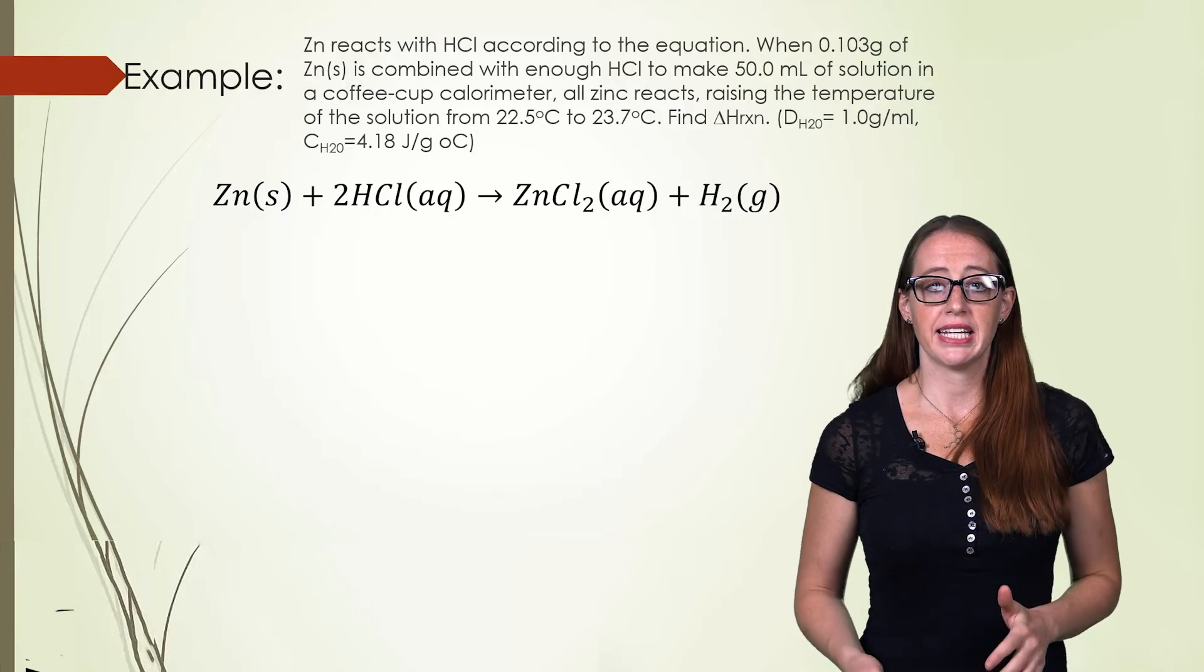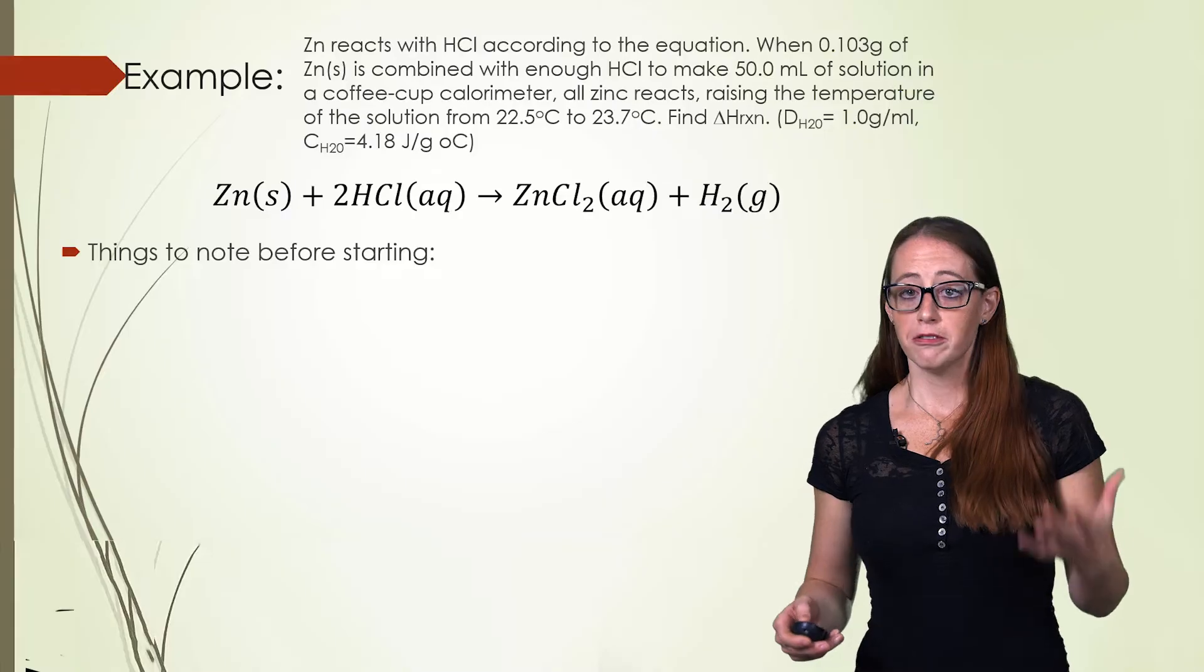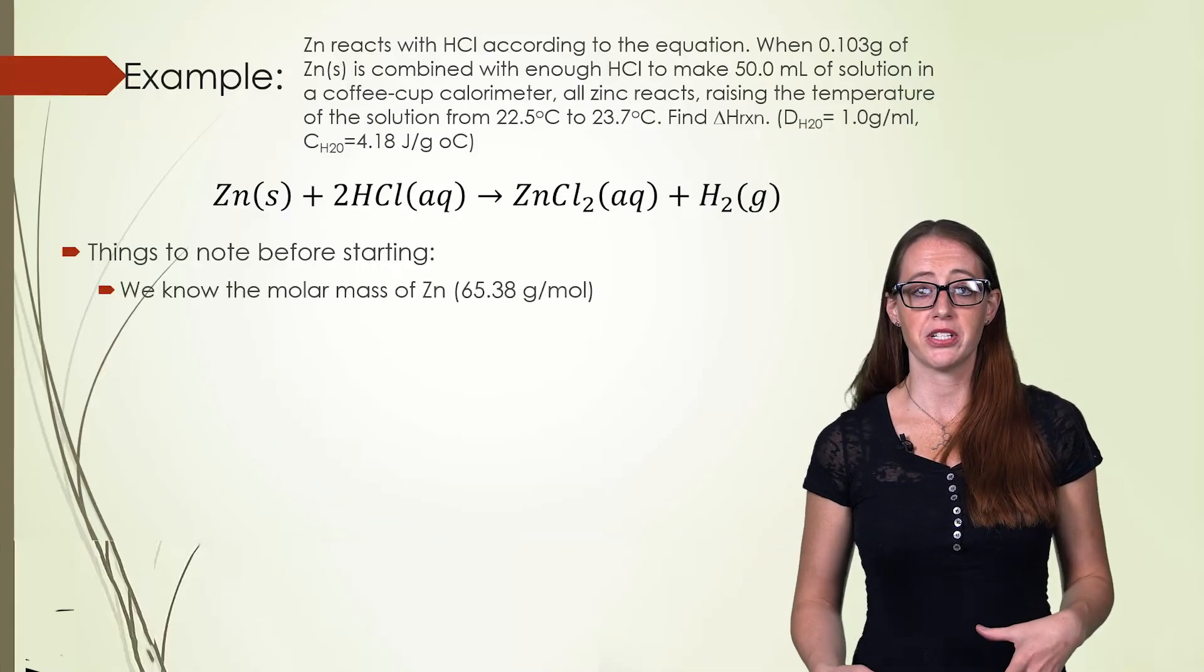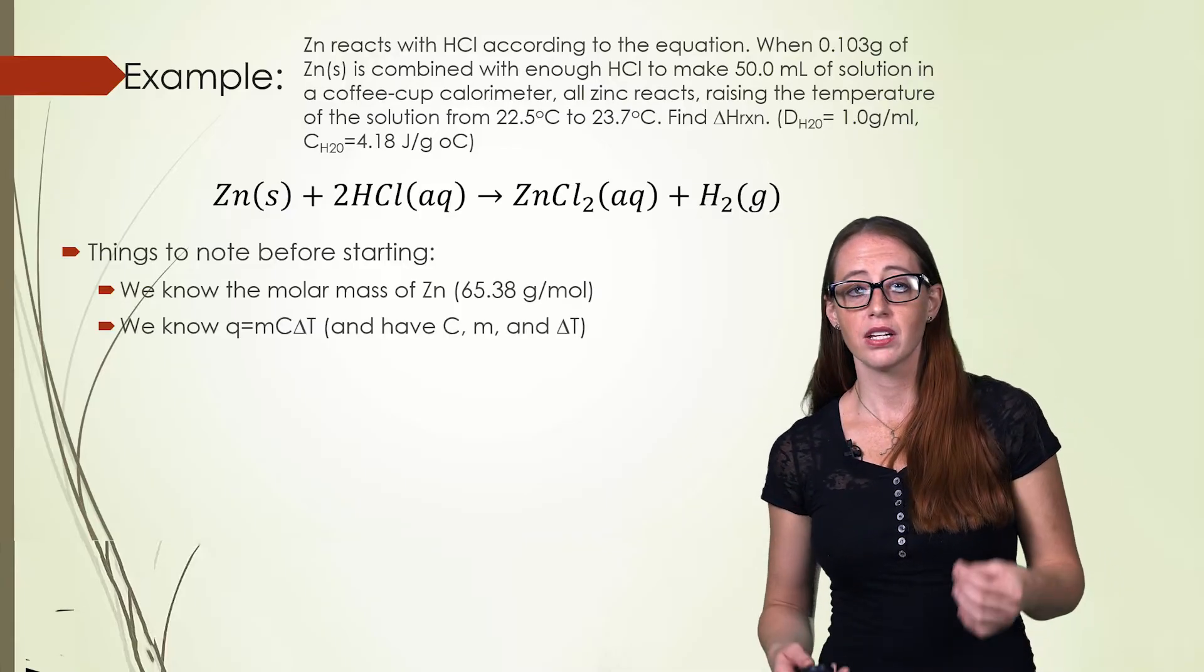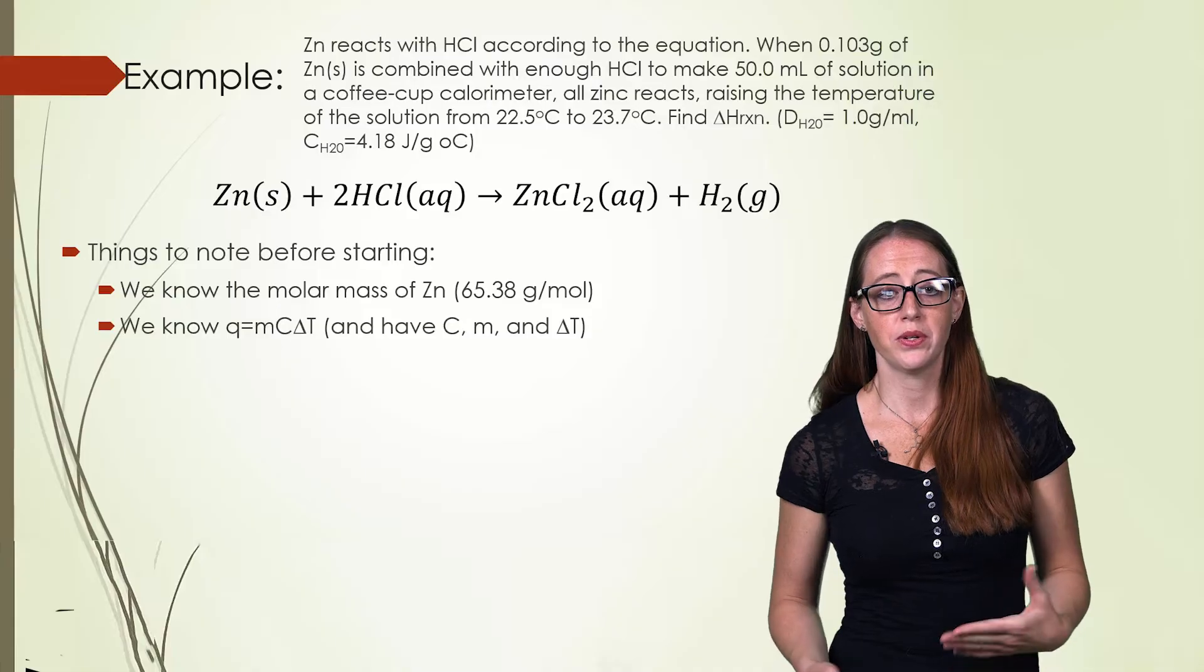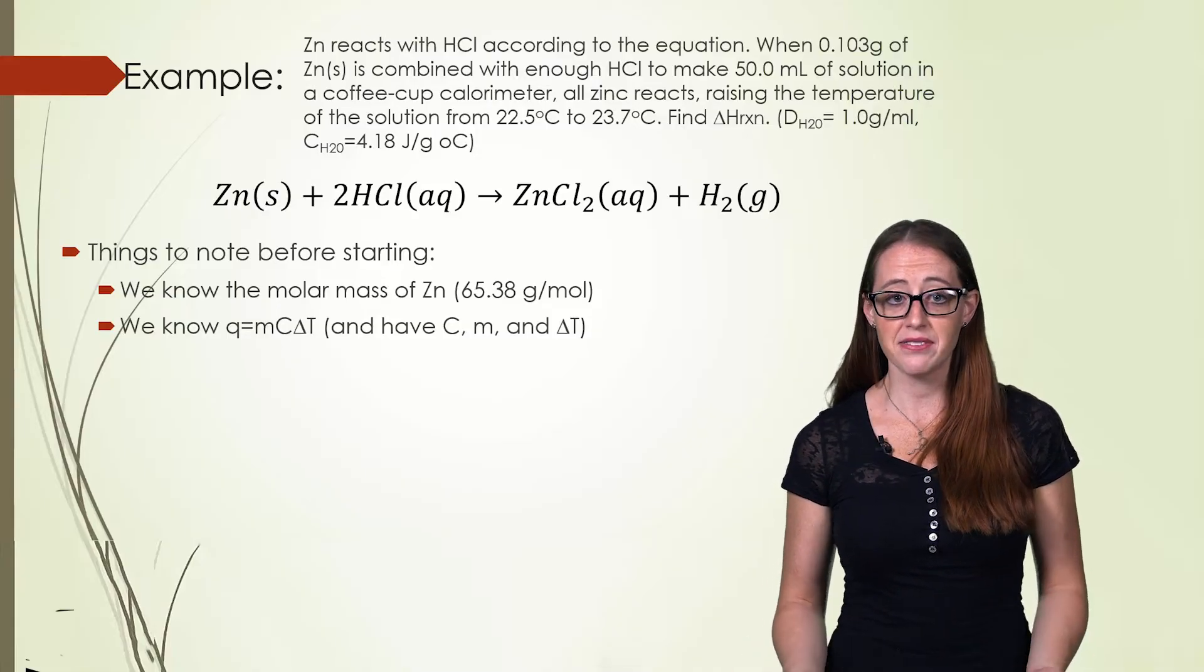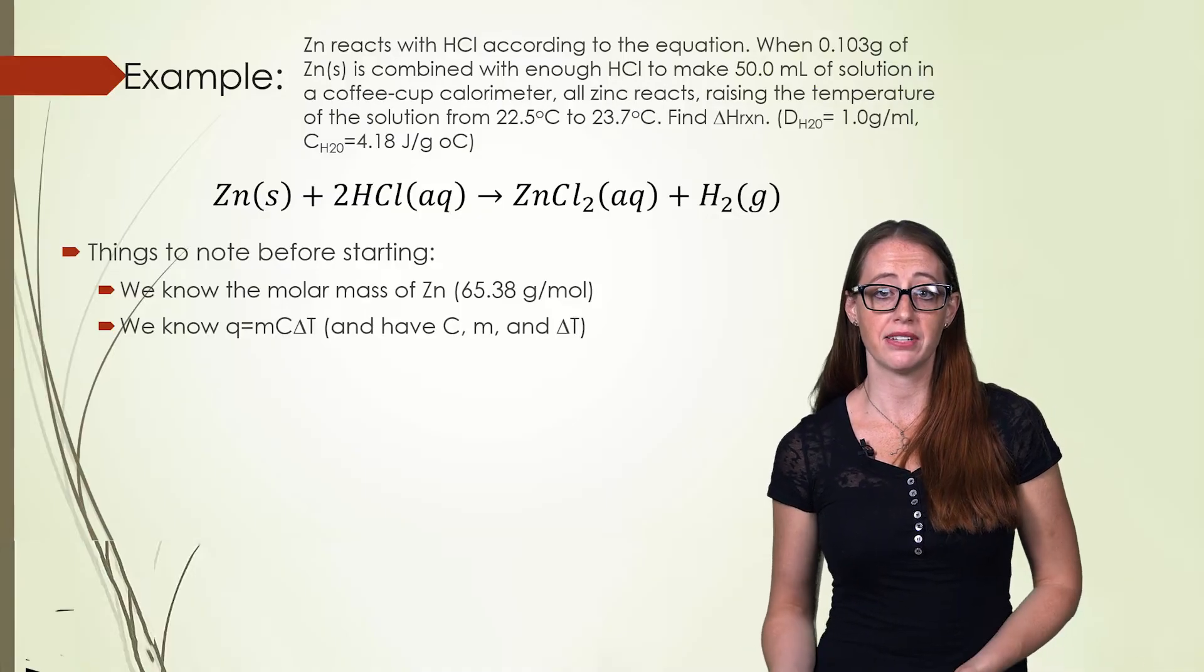Let's look at what we need to consider before starting the problem. First off, it's always good to know what we know and collect all that information. So remember that we know our molar mass of zinc. We also know that Q equals MC delta T. We have C, because we can look it up in a table, and we're given M and we're given delta T.